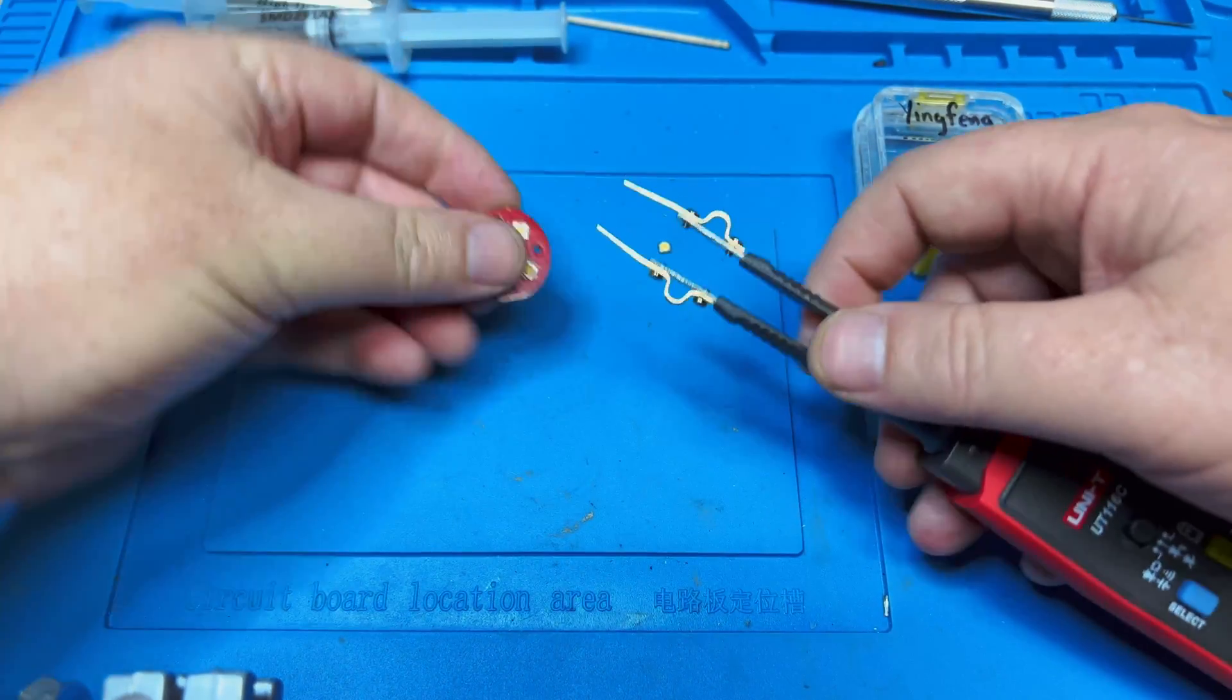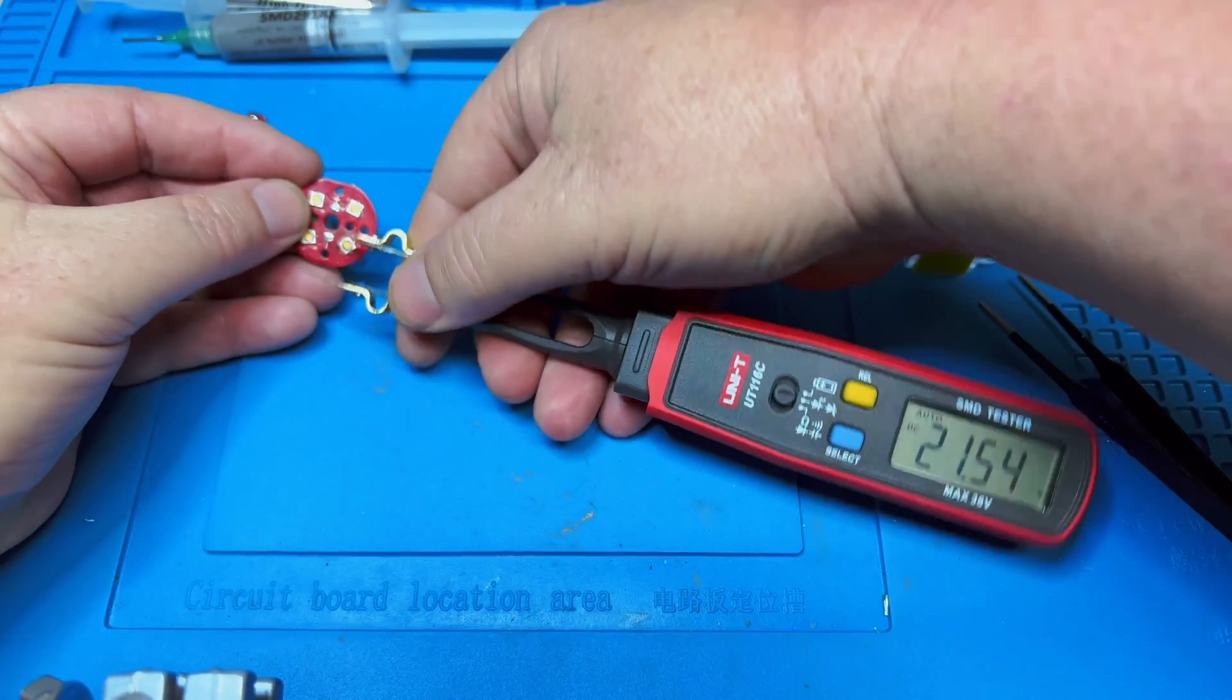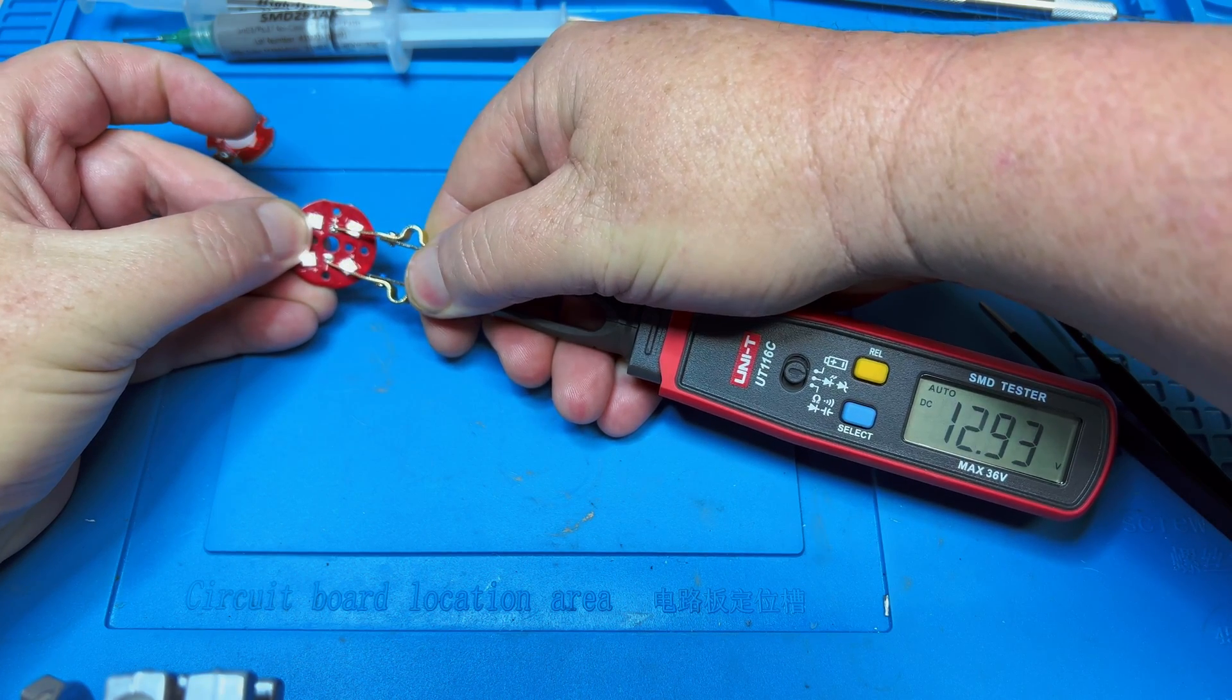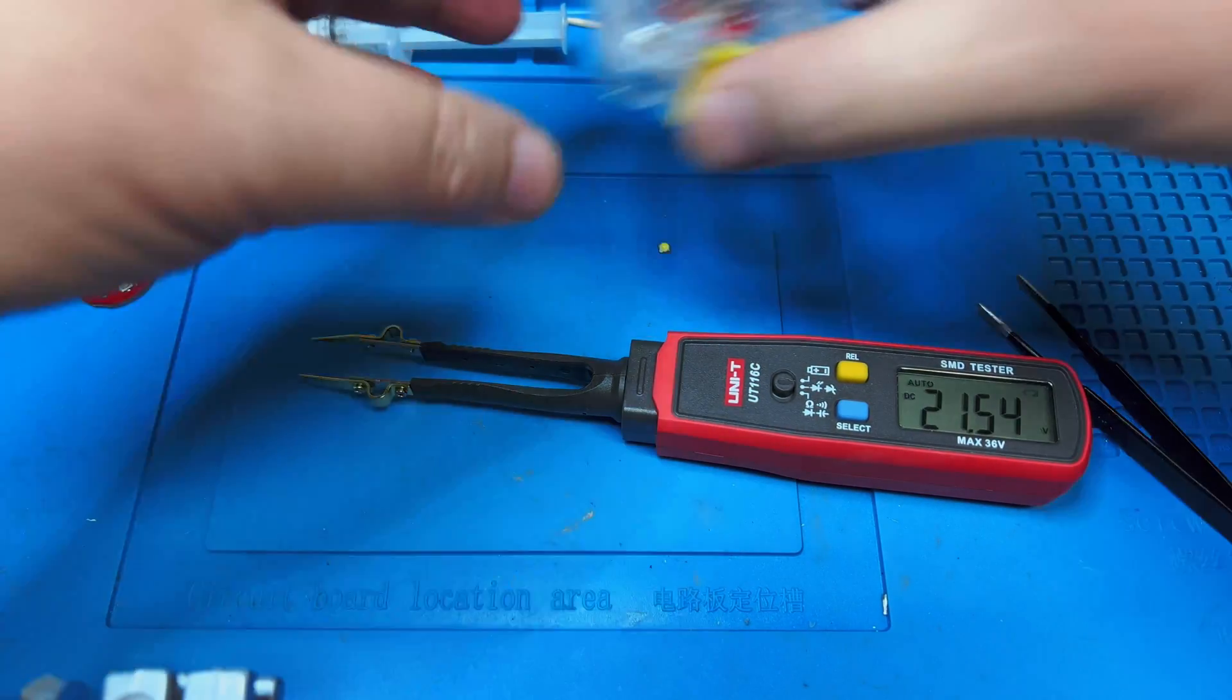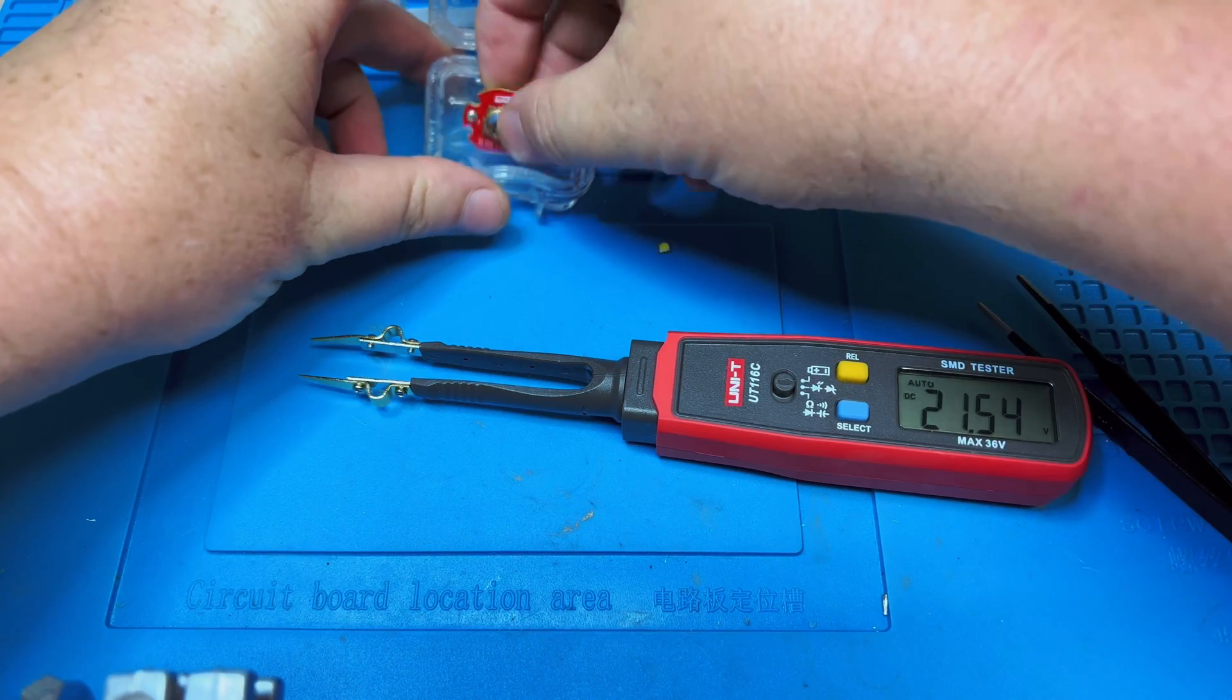And these are also—these are SST-20s—these are also 3-volt emitters, so we should get a similar reading. Let's see, there we go, yep, 2.4.